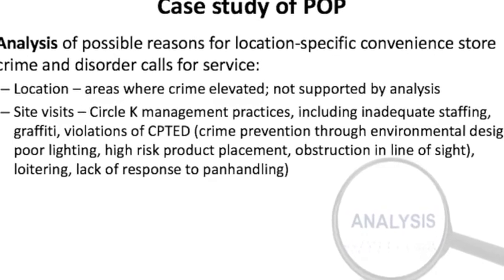The analysis of possible reasons for location-specific convenience store crime involved looking at the location, so looking at areas where crime is elevated, but overall these were found not to be supported by the analysis process. So they went through a site visit process where they looked at management practices, including inadequate staffing, graffiti, violations of crime prevention through environmental design such as poor lighting, high risk placement, product placement, obstruction in line of sight, loitering, lack of response to panhandling, and so forth. All of these things helped them to determine what the problem looked like and how they would respond.